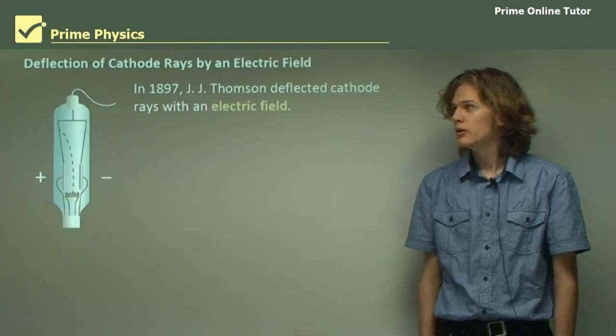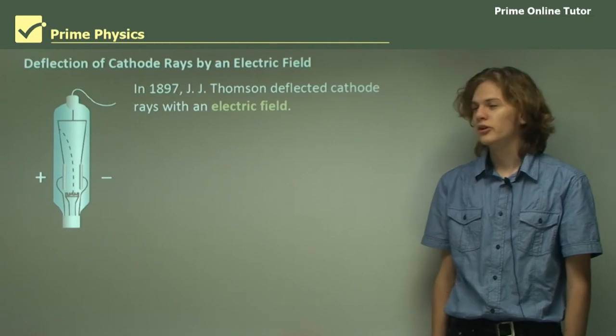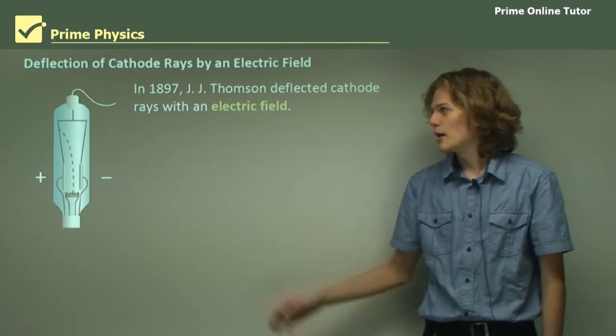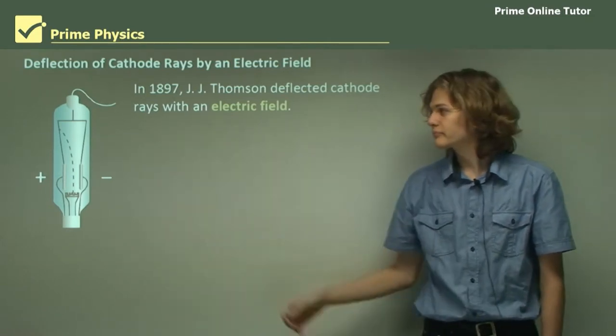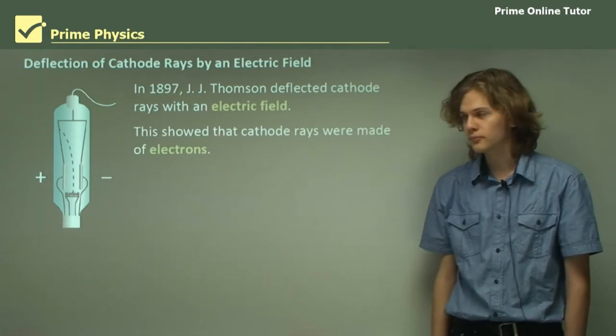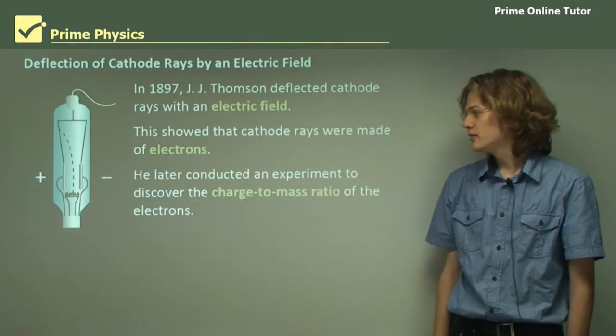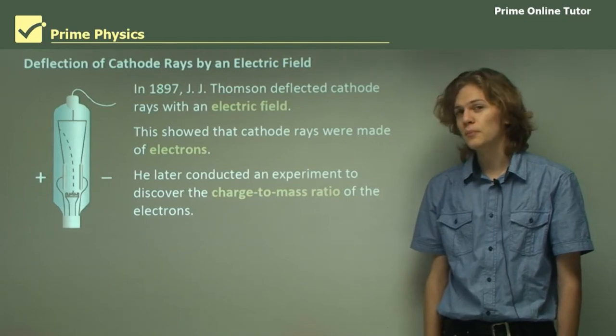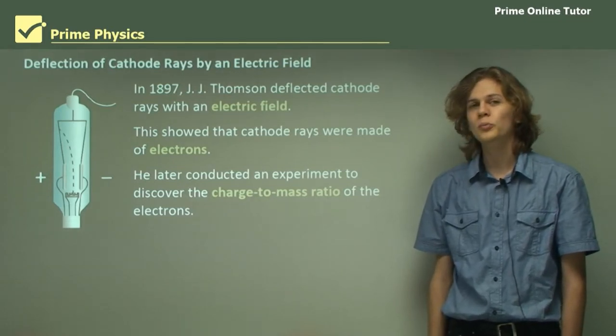In 1897, Thompson deflected the cathode rays with an electric field. We can see that happening in a diagram over here. This showed that cathode rays were made of electrons. He later conducted an experiment to discover the charge to mass ratio of the electron, which we'll be learning about today.